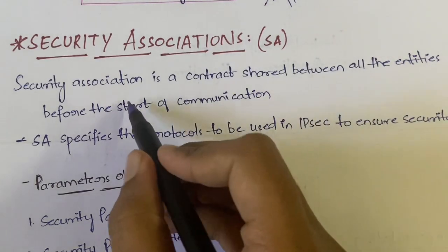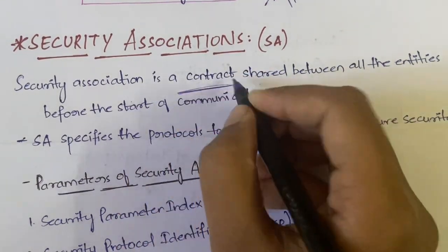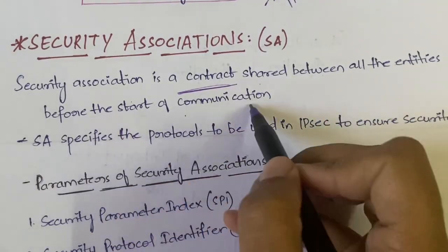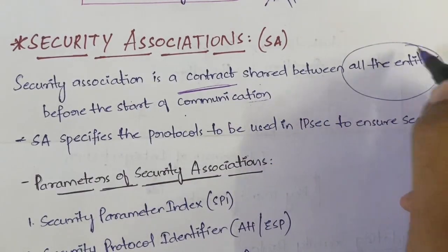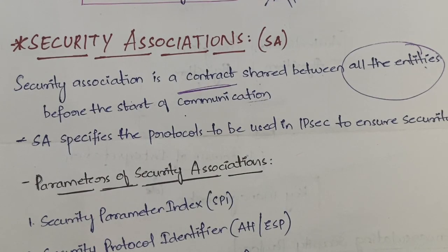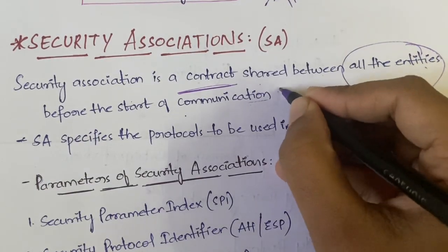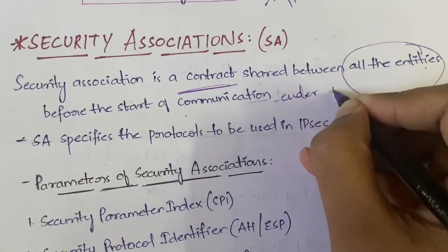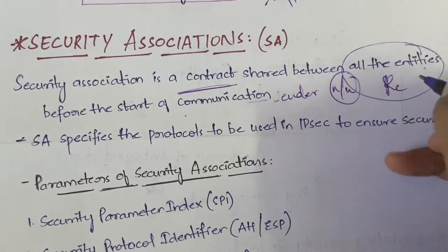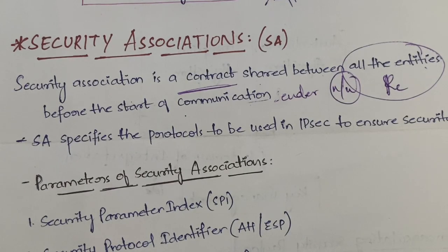A security association is a contract that is shared between all the entities before the start of the communication. All entities means those who are participating in the communication — sender, network, receiver. Routers can be there, gateways can be there — anything in the network. With all those things, the contract will be shared, and that is called a security association.